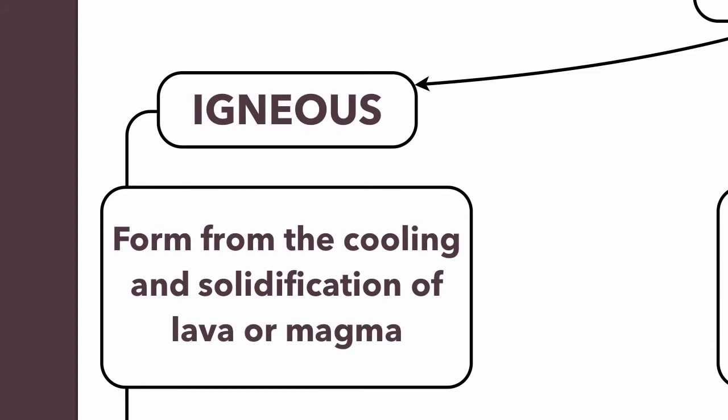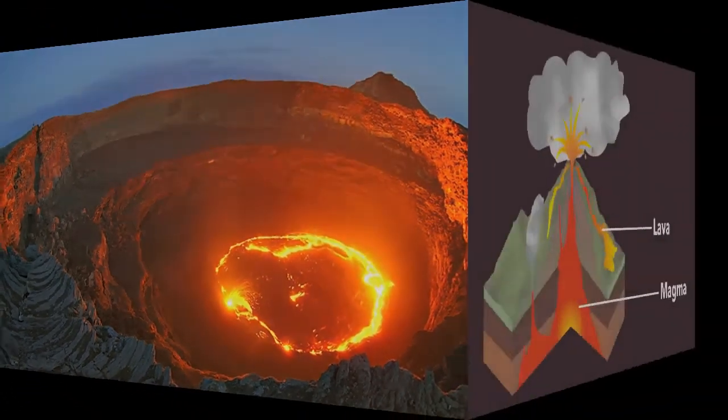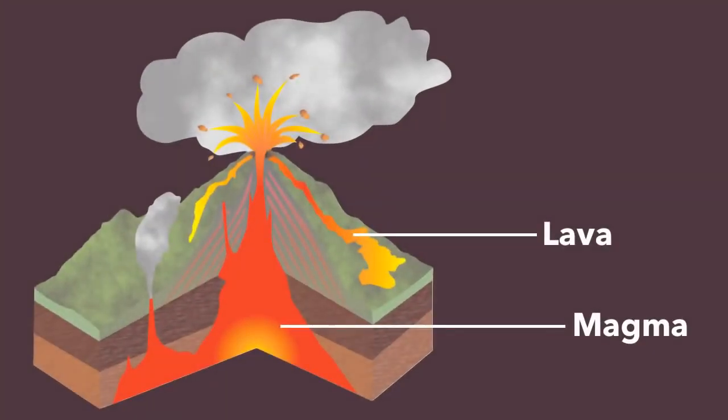When molten rock cools down and essentially turns into a solid, that is how an igneous rock is formed. When you think of lava and magma, you probably picture molten material in the crater of a volcano — and that's exactly what we're talking about. When it's deep inside the earth, under the surface, we call it magma. Once it erupts onto the surface, we call it lava. This material, whether inside the earth or on the surface, can cool and solidify.